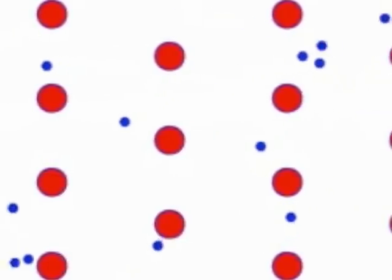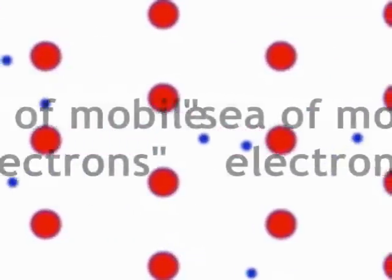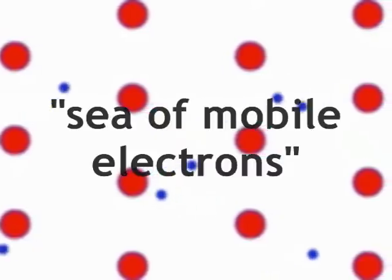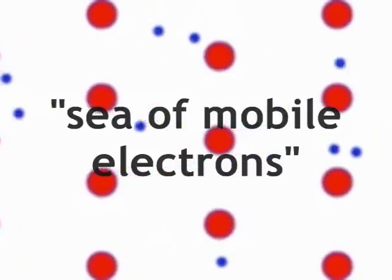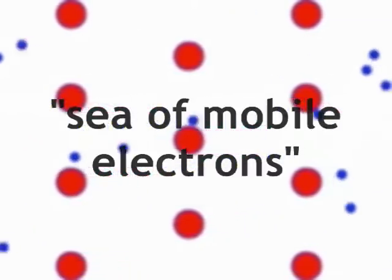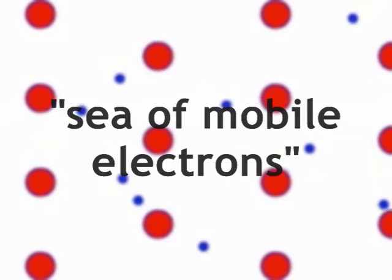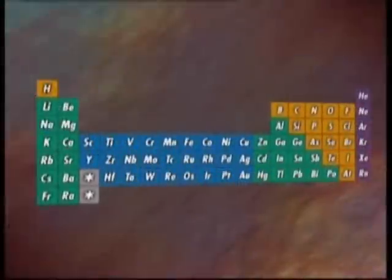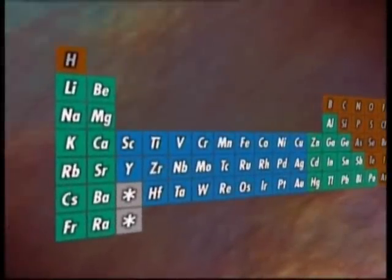Since no one wants the electrons, they just end up floating back and forth very rapidly in the space in between all of the metal atoms. This floating mess of electrons is called the sea of mobile electrons, meaning that there is a constant flow of electrons moving all around the metal atoms, but never really staying attached to any of them. This flow is what gives metals all of their important properties.